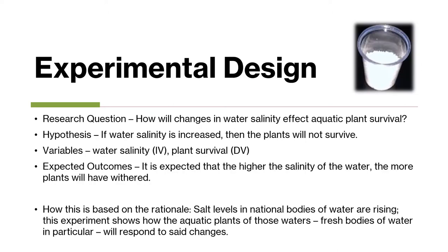Experimental design. My research question was: how will changes in water salinity affect aquatic plant survival? My hypothesis going into the experiment was: if water salinity is increased, then the plants will not survive. My variables were water salinity and plant survival, and the expected outcome was that the higher the salinity of the water, the more plants will have withered. Salt levels in our national bodies of water are rising, and this experiment shows how the aquatic plants of those waters — fresh bodies of water in particular — will respond to said changes.